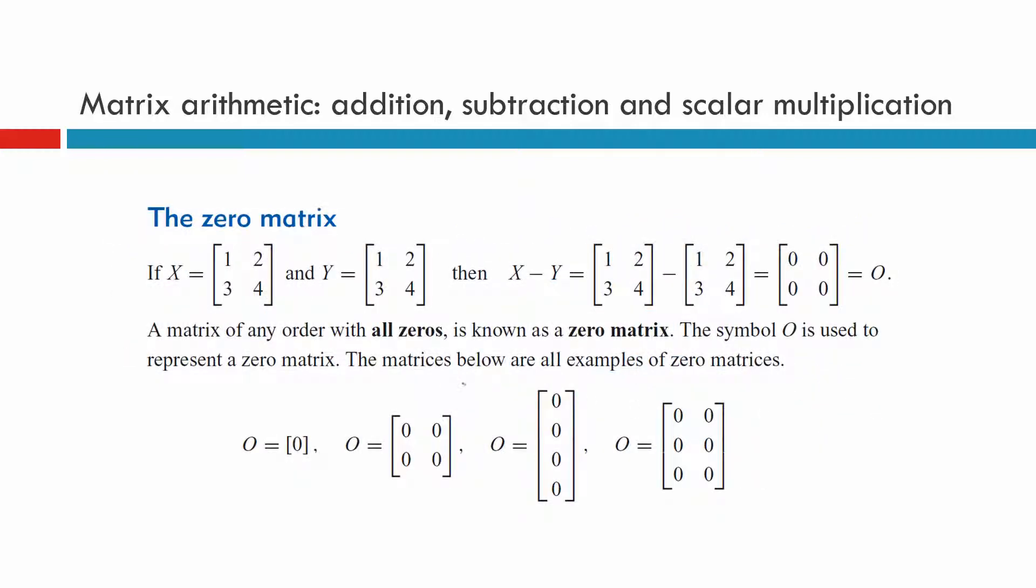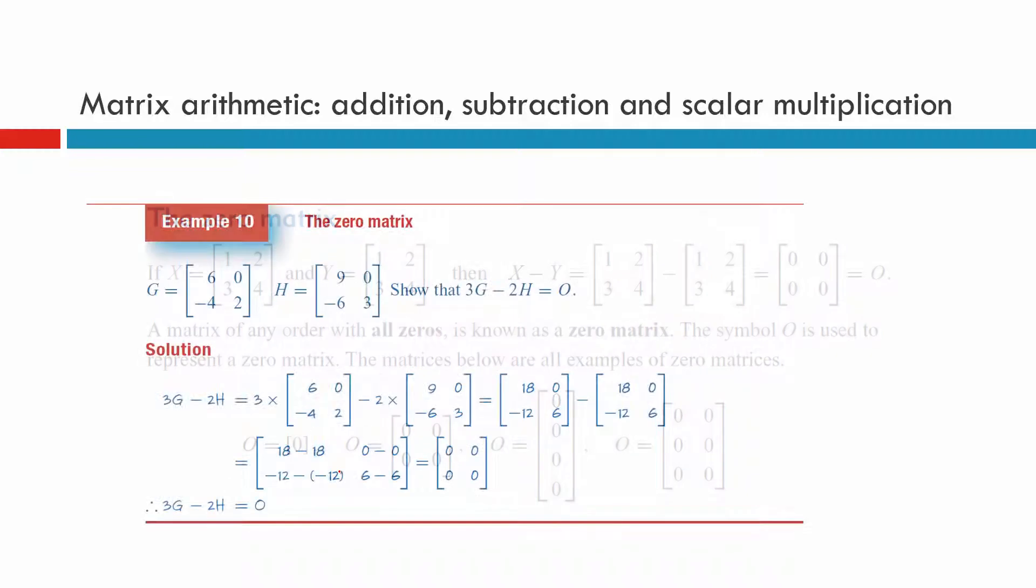Sometimes doing things in your calculator takes longer. The zero matrix. A zero matrix is a matrix which we classify as the zero, where all the letters, all those elements are zeros. That's all it is. All the letters are zeros. And it can be any one.